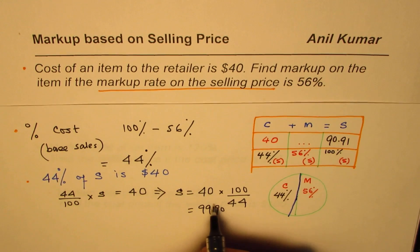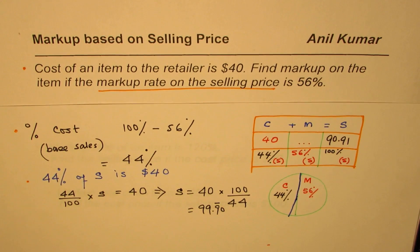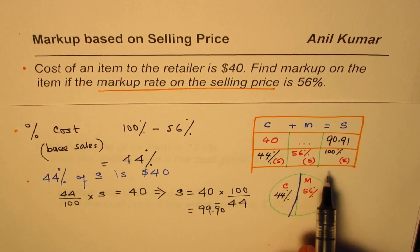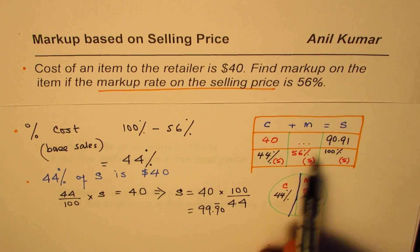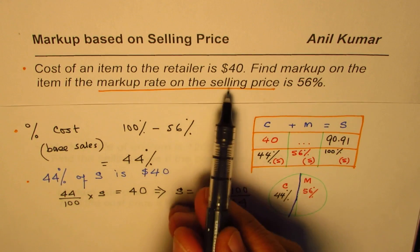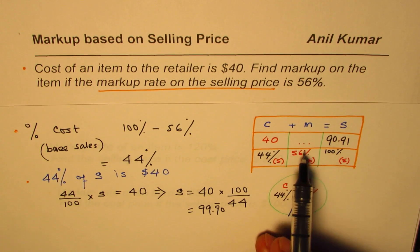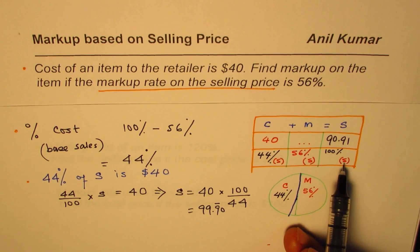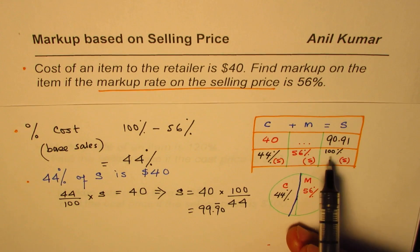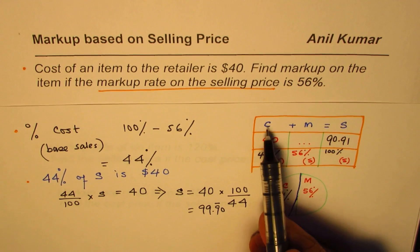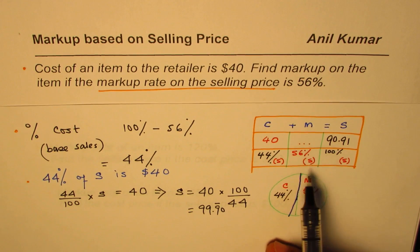To summarize what we've done: we took markup as based on selling price, so 56% is based on selling price. The whole selling price comprises 44% as cost and 56% as markup, and that approach helps us solve this question.